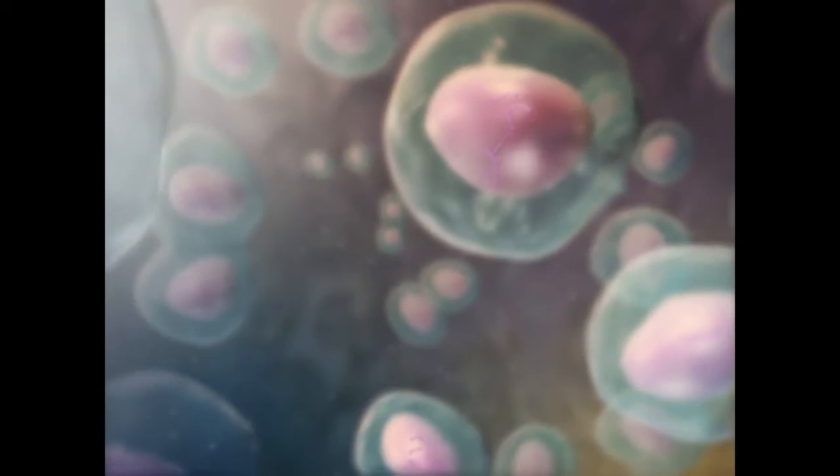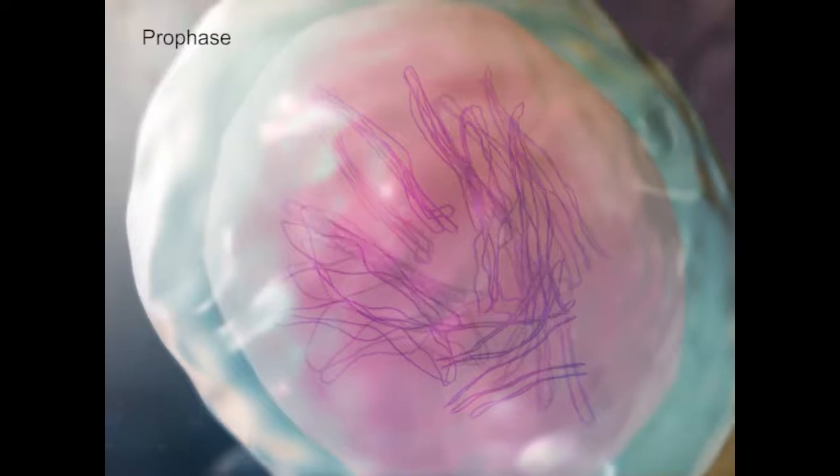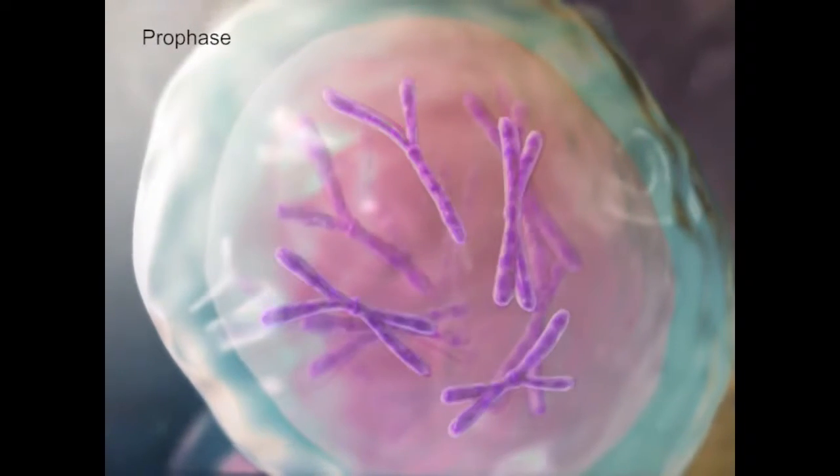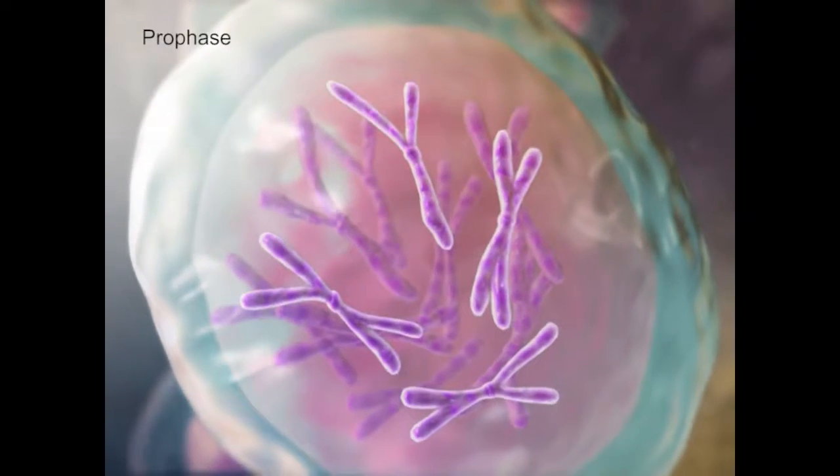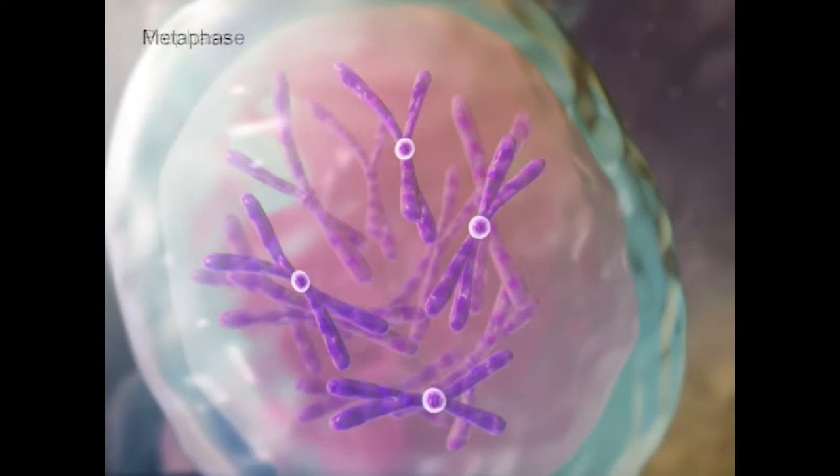The process begins in the cell nucleus. Identical copies of DNA molecules organize into chromatid pairs within the chromosome structure. These pairs are connected to each other at the chromosome's centromere.